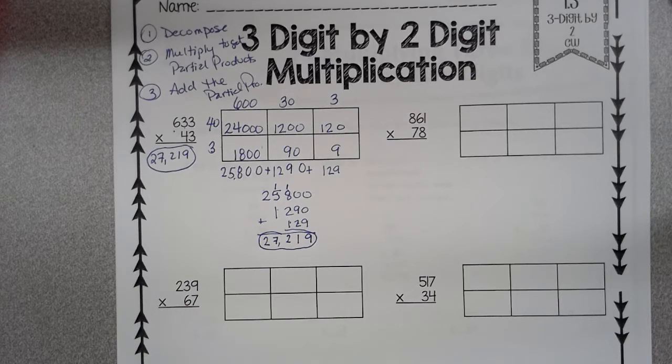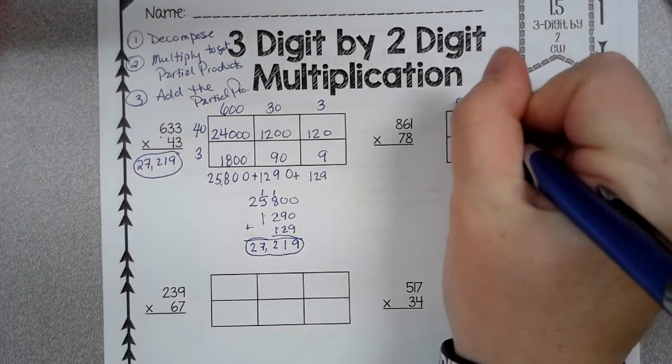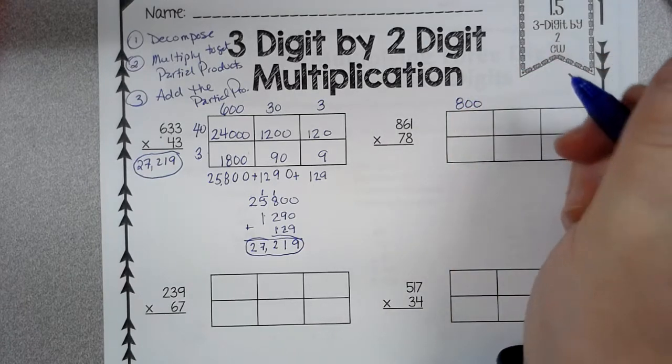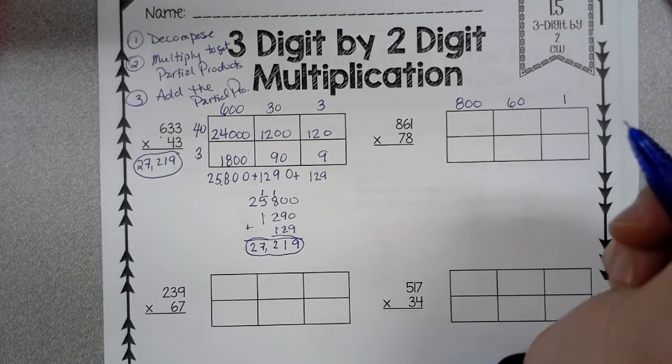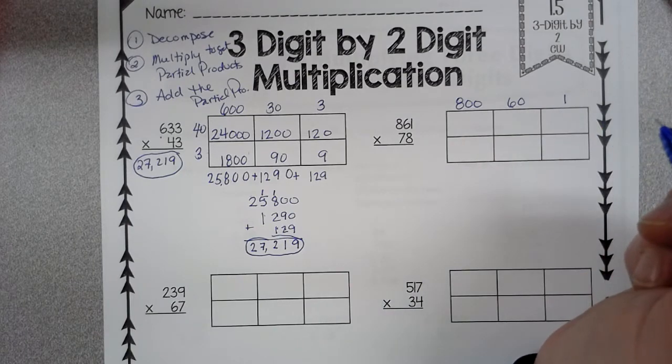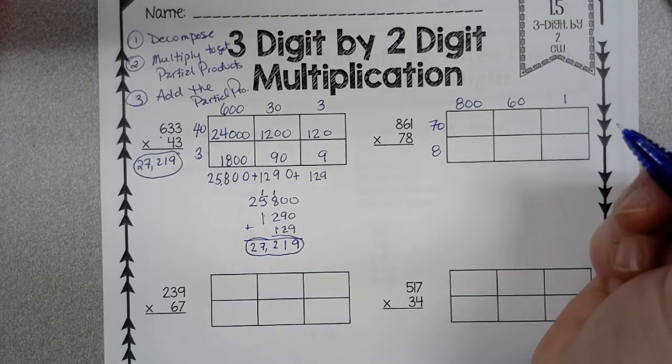Let's go to the next one. So the next one is 861 times 78. So remember the very first thing we do is we decompose our number, 861. The 8 is in the 100s place, the 6 is in the 10s place, and the lovely 1 is in the 1s place. Then 78.